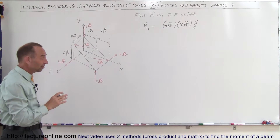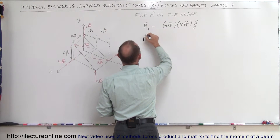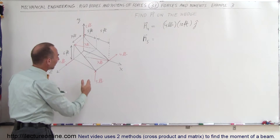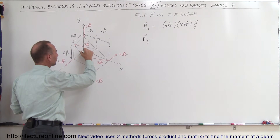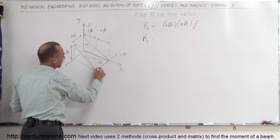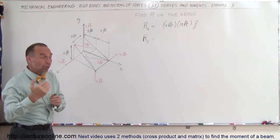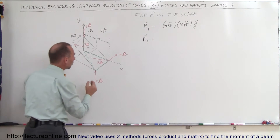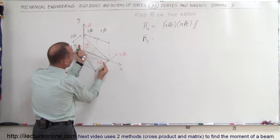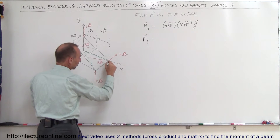Now let's find the moment of the 5-pound forces, which is a little more difficult because they're diagonally across the wedge — that spans two dimensions. The distance between the two lines of action is diagonally across the bottom of the wedge, which means there is a distance in the X direction and a distance in the Z direction. So we'll have two components to the moment. What we can do is move one of the forces over to compare the moments caused by components in each direction.